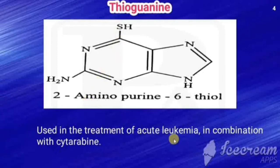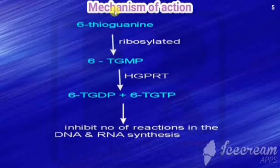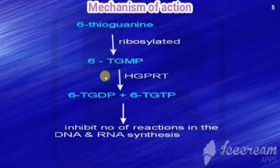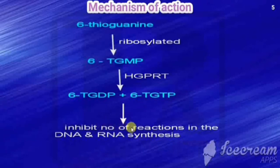6-Thioguanine is used in the treatment of acute leukemia in combination with cytarabine. Regarding its mechanism of action: 6-thioguanine is ribosylated by the enzyme HGPRT (hypoxanthine-guanine phosphoribosyl transferase) to form 6-TGMP (6-thioguanine monophosphate), then further converted to 6-thioguanine diphosphate and 6-thioguanine triphosphate. These metabolites inhibit a number of reactions in DNA and RNA synthesis.